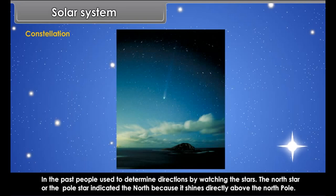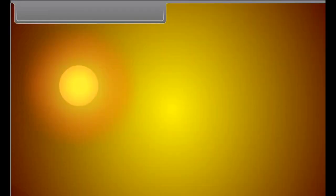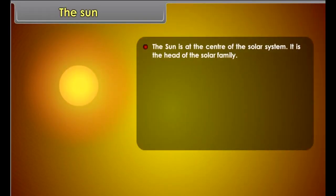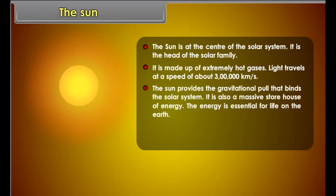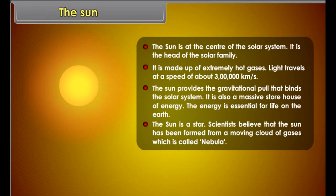The north star or pole star indicated the north direction. The sun is at the center of the solar system and is the head of the solar family. It is made up of extremely hot gases. Light travels at a speed of about 3 lakh kilometers per second. The sun provides the gravitational pull that binds the solar system. It is also a massive storehouse of energy, and that energy is essential for life on the Earth. Scientists believe that the sun has been formed from a moving cloud of gases called a nebula.